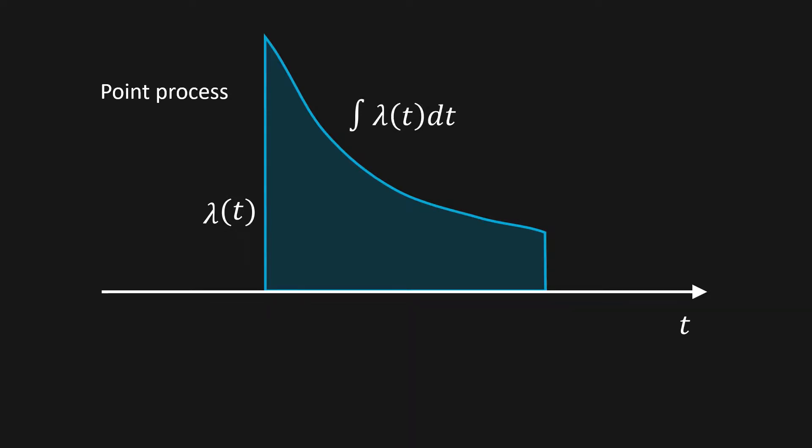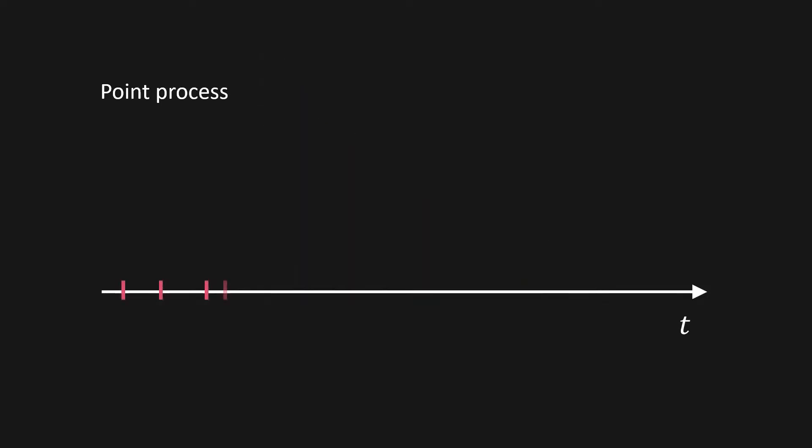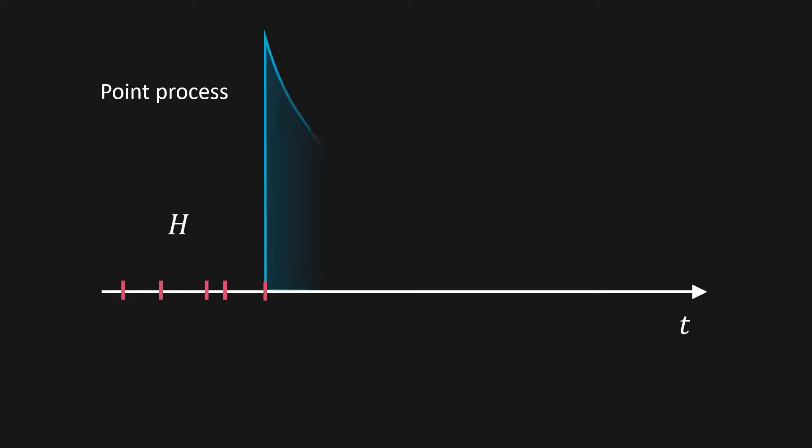How can we use all of this to predict the next point? Well, given a history of points we can define where we expect to see new points in the future with an intensity function. We can even learn this function from data.